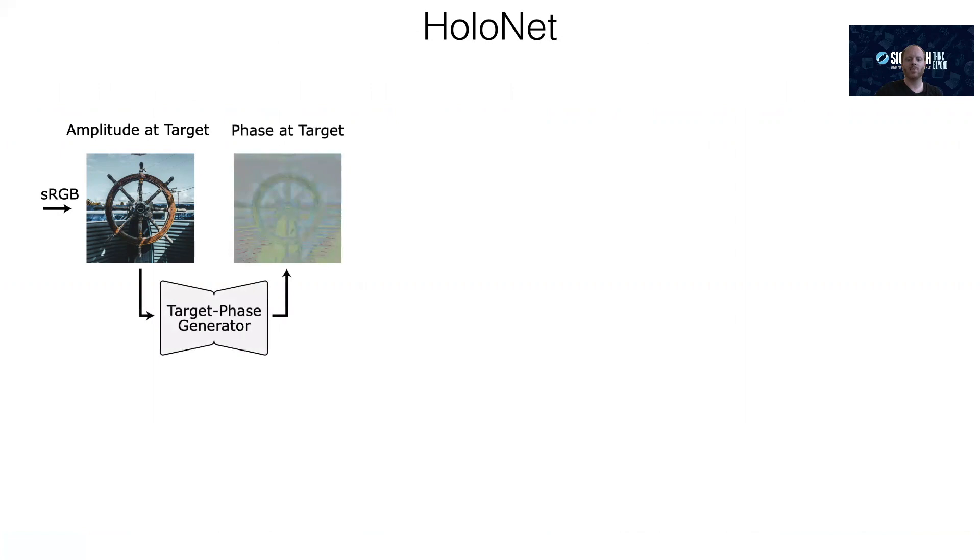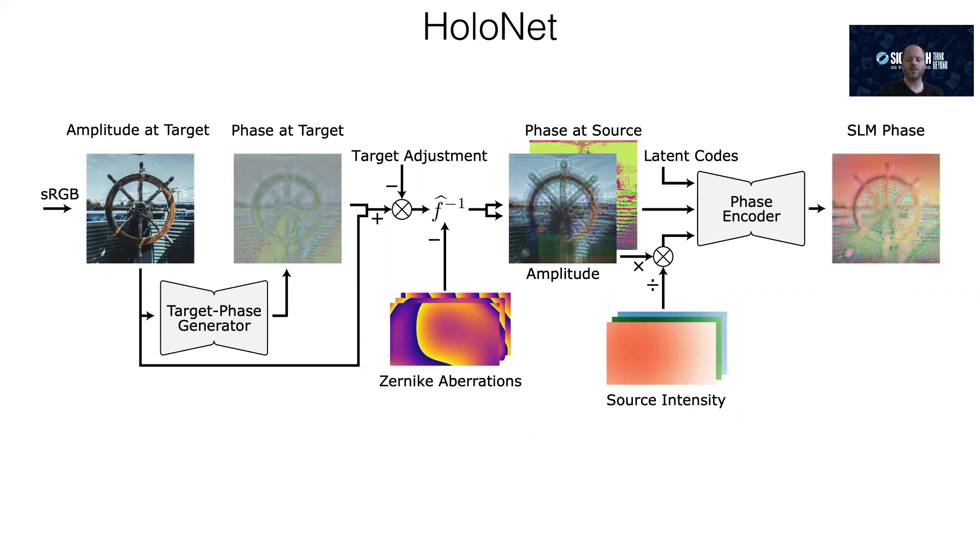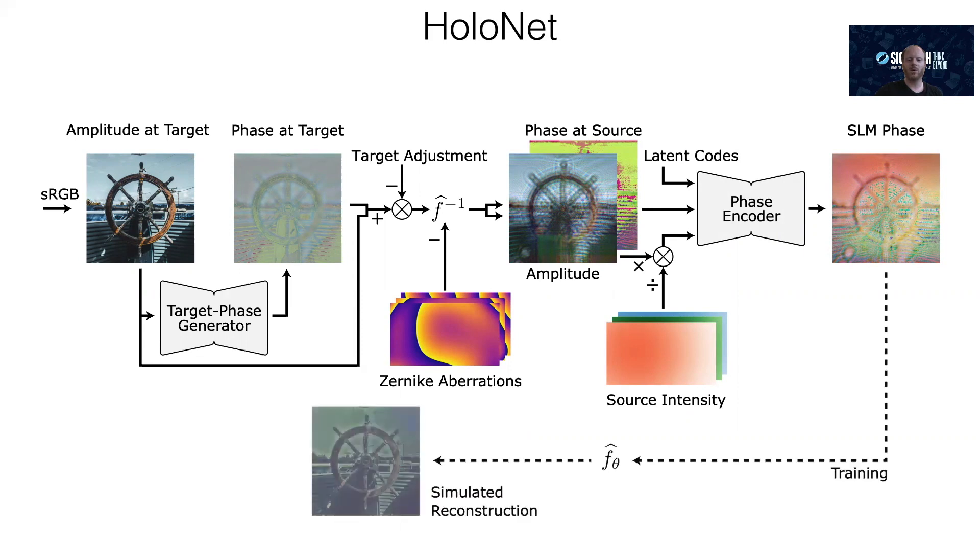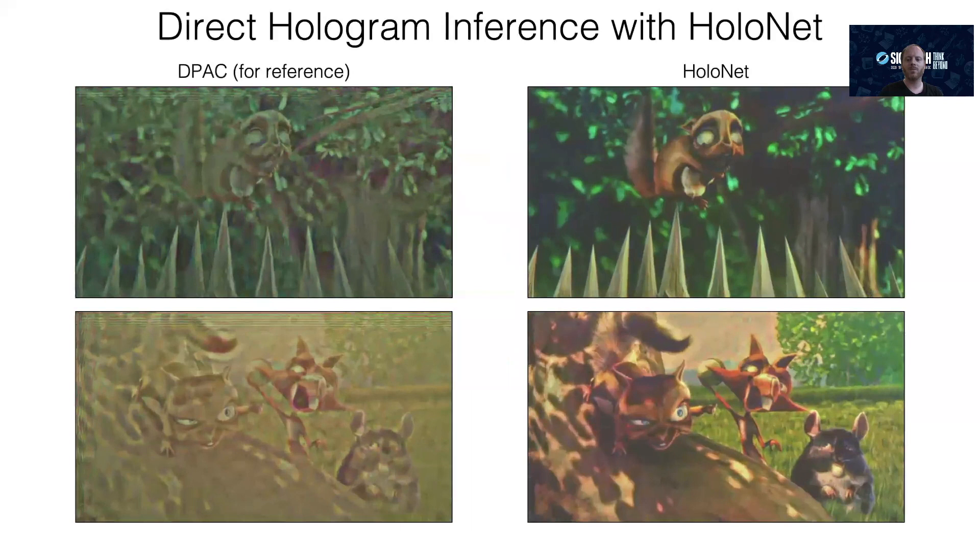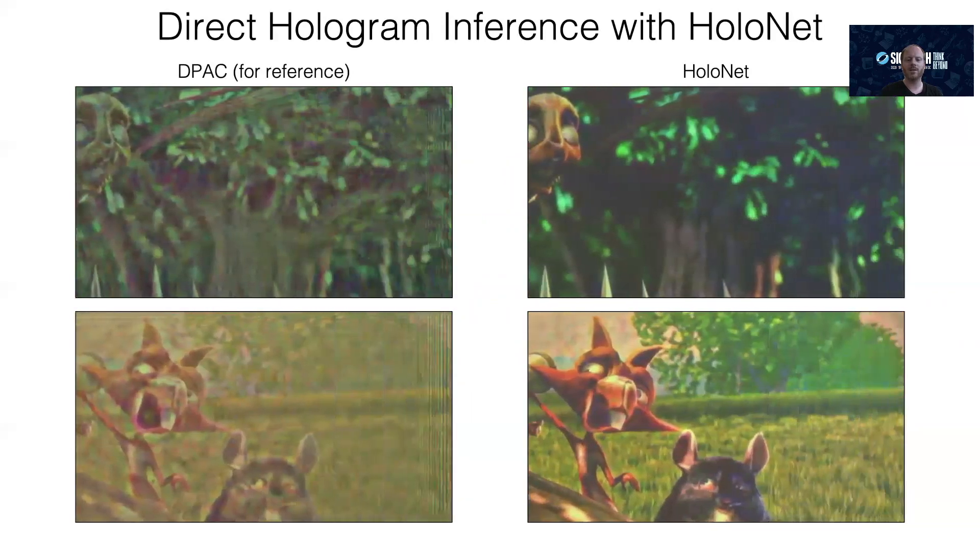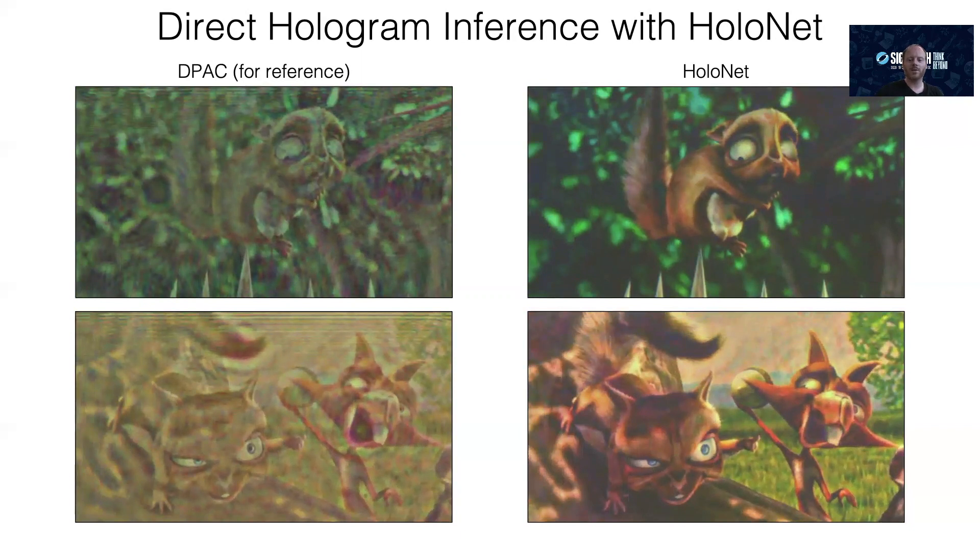I also promised you a neural network, so here it is. It takes a target image in sRGB space as input and converts it into amplitude. Then, we use a U-Net to predict the phase at the target plane. This complex-valued field is adjusted with the calibrated model I mentioned earlier and propagated to the SLM plane. Here we send the field through another U-Net to calculate the phase-only SLM pattern, taking a few other terms into account. Using the resulting SLM pattern, we simulate the forward model, compare the result to the target image, and backpropagate the error into our two U-Nets during training time. Once trained, this network runs in real-time. Compared to the best iterative method today, HoloNet is substantially better, as you can see here in this captured data. Quantitatively, it's not quite as good as our iterative methods, but almost, and it runs in real-time.